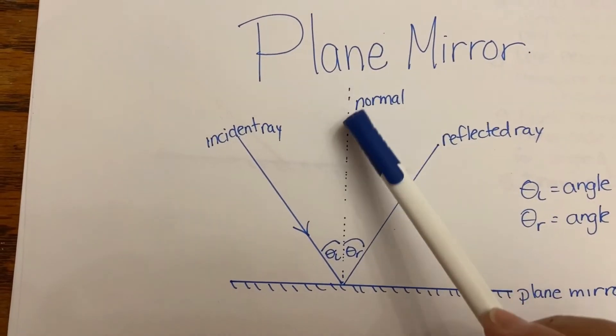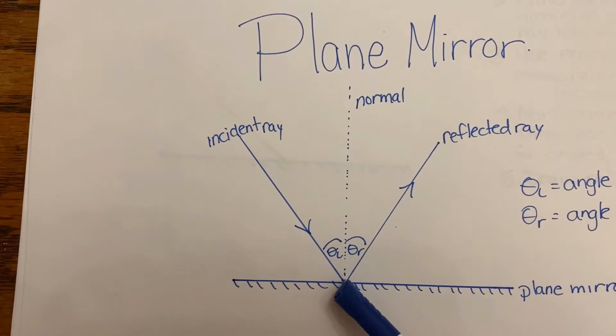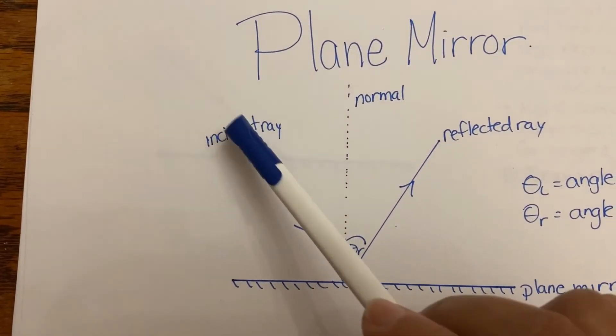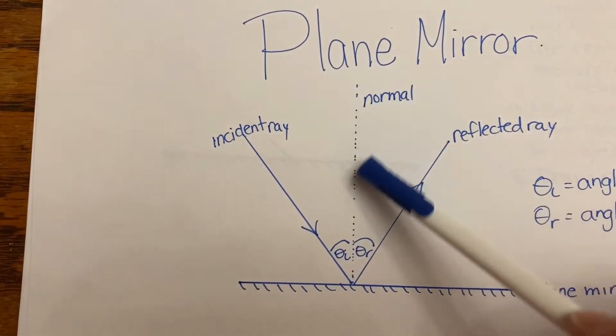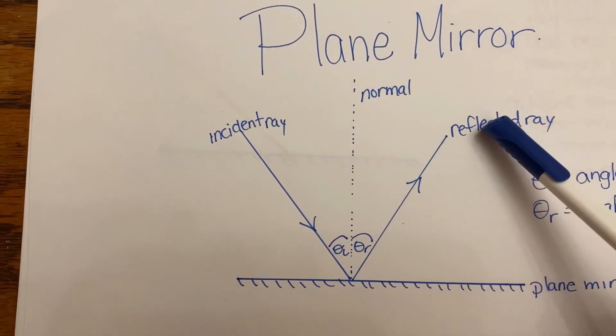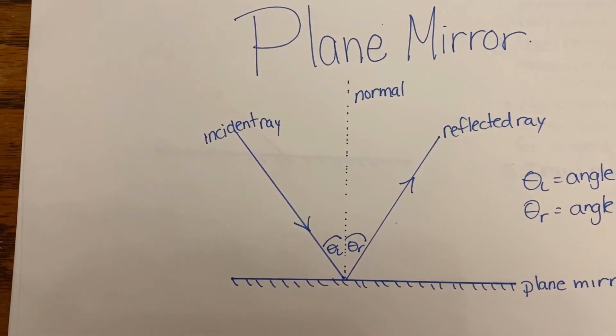The normal is a line that splits down and hits the mirror at 90 degrees. So the incident ray comes in, the normal is hitting the mirror at 90 degrees, and then the light energy is bounced back out, and that's called a reflected ray.